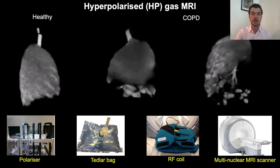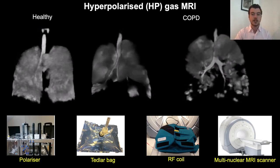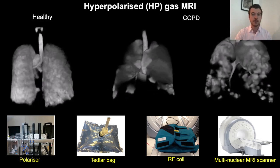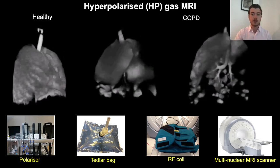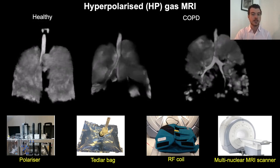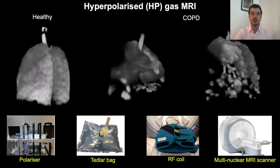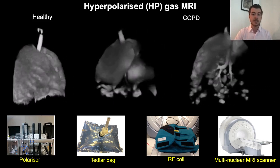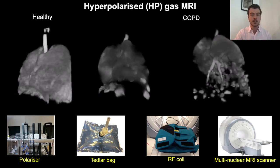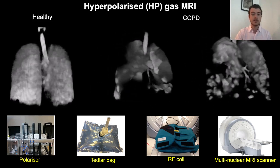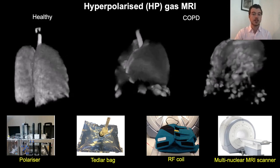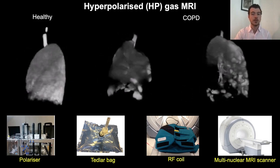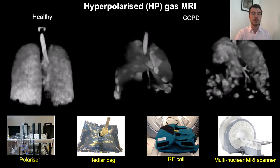So what is hyperpolarised gas MRI? It is a functional imaging modality that depicts regional lung ventilation with exquisite spatial resolution within a single breath. Here we can see some examples of hyperpolarised gas images showing the ventilation of a healthy volunteer and two COPD patients. However, to generate these images we require a specialised laser polariser to boost the MR spin magnetisation of a noble gas which acts as a contrast agent. The polarised gas is then transferred to a tether bag for the patient to inhale while wearing a custom built radio frequency coil before being imaged in a multinuclear MRI scanner.